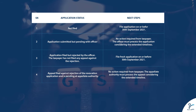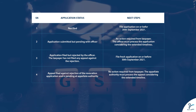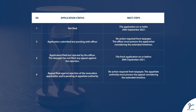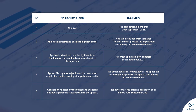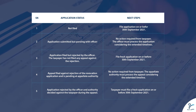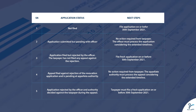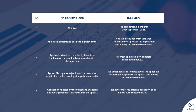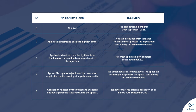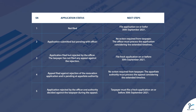Status four — appeal filed against rejection of the revocation application and is pending at appellate authority: next steps — no action required from taxpayer; the appellate authority must process the appeal considering the extended timeline. Status five — application rejected by the officer and authority decided against the taxpayer during the appeal: next steps — taxpayer must file a fresh application on or before 30th September 2021.